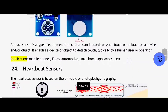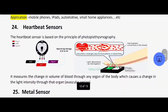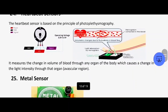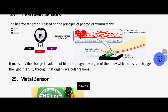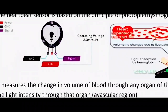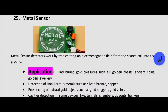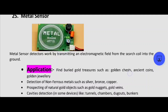Next one is the heartbeat sensor. The heartbeat sensor is based on the principle of photoplethysmography. It measures the change in volume of blood through any organ of the body, which causes a change in the light intensity through that organ. As blood is circulated, the sensor detects the signals on the VCC ground and signal pins.